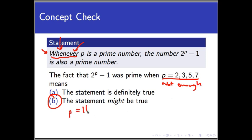The next prime number after 7 is 11. And we can calculate that 2^11 - 1. 2^11 is 2,048. Minus 1 is 2,047. And unfortunately, 2047 is not prime. It's equal to 23 times 89.